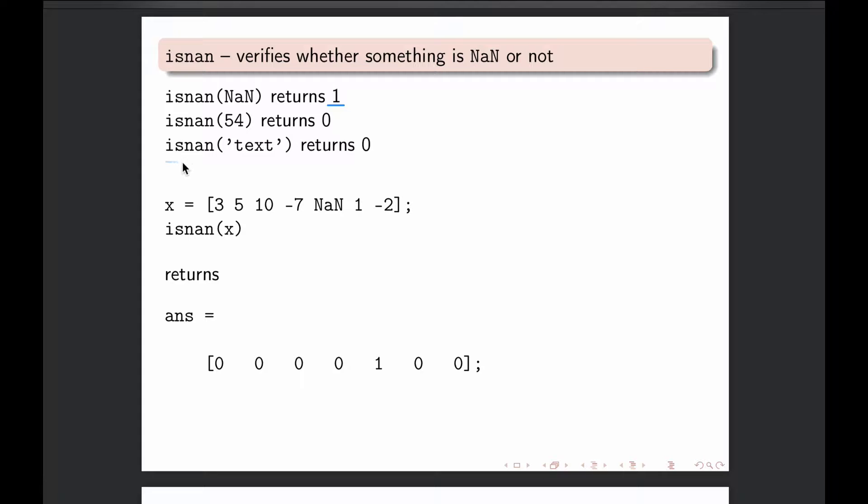If you ask isNAN on text, it also returns zero. Remember that not a number doesn't mean it's a string array or something like that. It means it is from calculation point of view, not a numerical result.